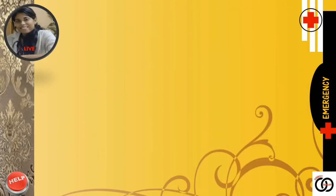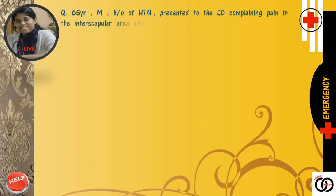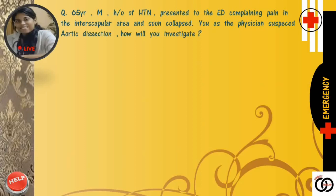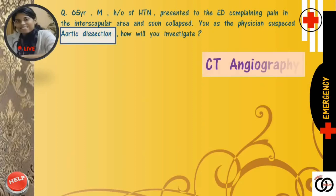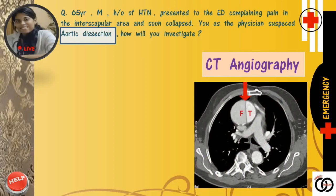Next question: A 65-year-old male with history of hypertension presented to the emergency department complaining of pain in the interscapular area and soon collapsed. You as the physician suspected aortic dissection. How will you investigate? Remember, the investigation of choice for aortic dissection is CT angiography. See the CT angio of this patient — can you appreciate two lumens in the ascending aorta because of the dissection? One is the false lumen and the other is the true lumen. Because of hypertension, which is actually the most important risk factor for aortic dissection, an intimal tear is triggered. So now blood flows in the vessel's layer between the intima and the media — that's why two lumens. But please note, the patient is unstable here, he is collapsing. We don't have time to perform CT angiography. So the investigation of choice for an unstable patient is transesophageal echocardiography, TEE.